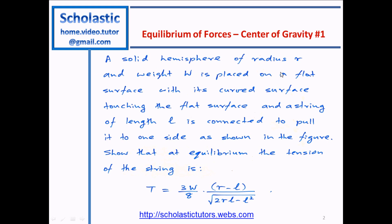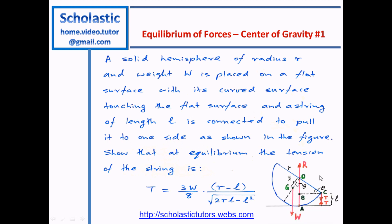A solid hemisphere of radius R and weight W is placed on a flat surface with its curved surface touching the flat surface, and a string of length L is connected to pull it to one side as shown in the figure. R is the radius of the hemisphere, L is the length of the string, and W is the weight of the hemisphere.